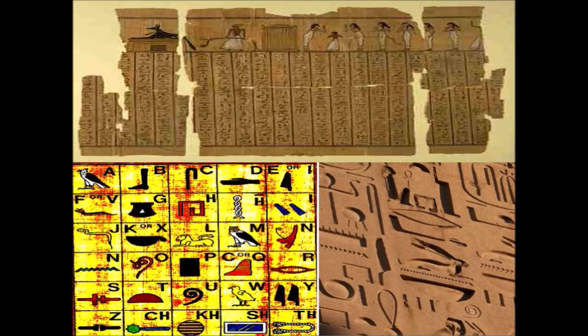Writing System. The Egyptian form of writing is known as hieroglyphics – a pictogram-based system. It was developed around 3000 BC. Many texts and books were written using this script.